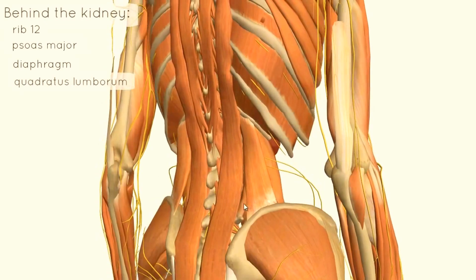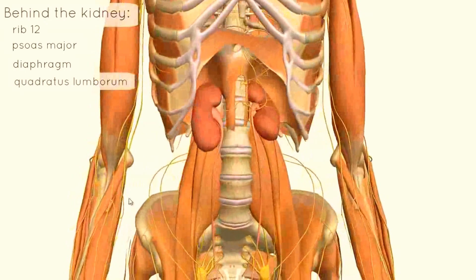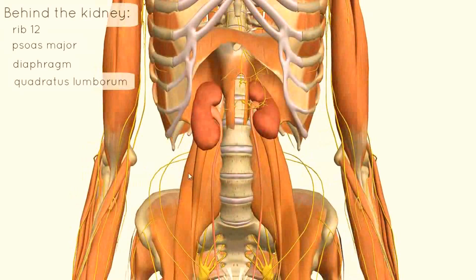If I just rotate it around to the front, you can see that the quadratus lumborum is hidden because the psoas major is so large in this model. You've also got the transversus abdominis muscle, which is not shown in this model.